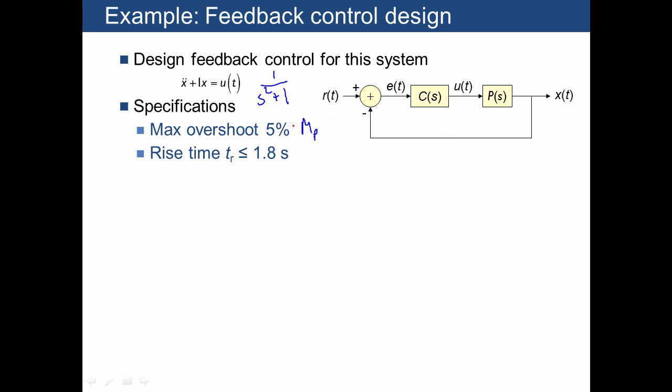The maximum overshoot specification tells us that we need a damping ratio of at least 0.7 from the formula that we showed previously. Similarly, the rise time, which is 1.8 over omega n, that has to be less than or equal to 1.8.